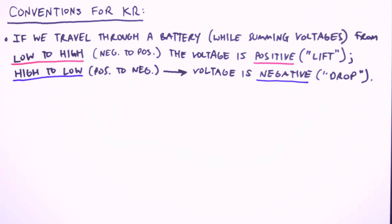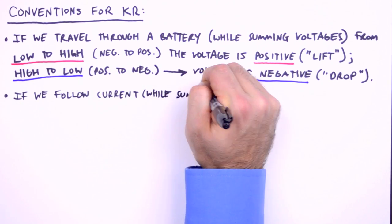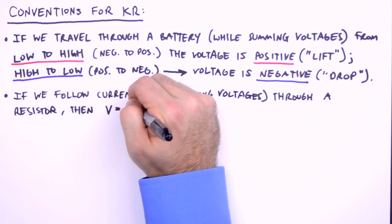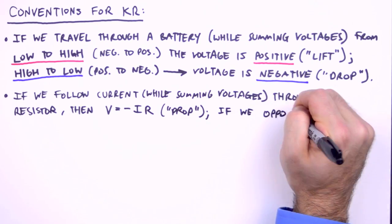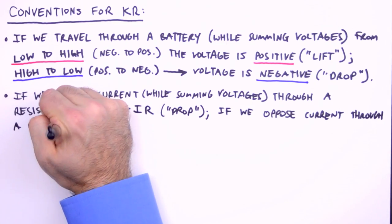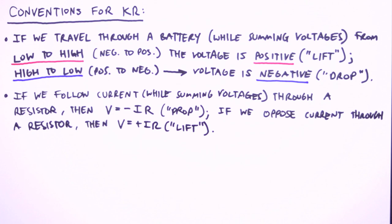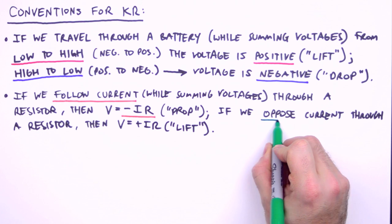It turns out that the sign of the voltage across a resistor also depends on the direction of our labeled current. So if we follow a current while summing voltages through a resistor, then the voltage across the resistor is negative V, or invoking Ohm's law, negative I times R. Drop! If instead we oppose the direction of the labeled current as we pass through the resistor, then the voltage across the resistor is treated as positive I times R. So for resistors, follow the current, negative IR. Oppose the current, positive IR.